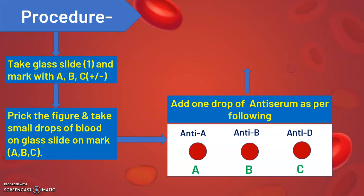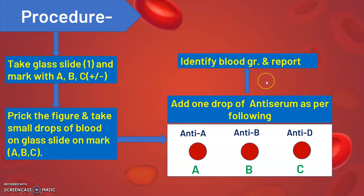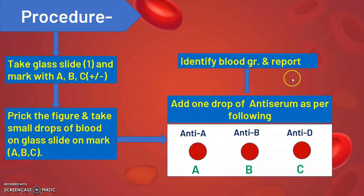Lastly, identify the blood group as per the clumping or agglutination and prepare the report. This is the procedural flow to determine the blood group.